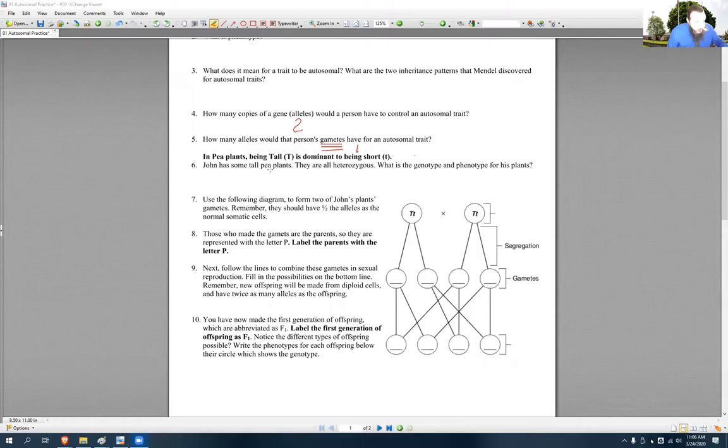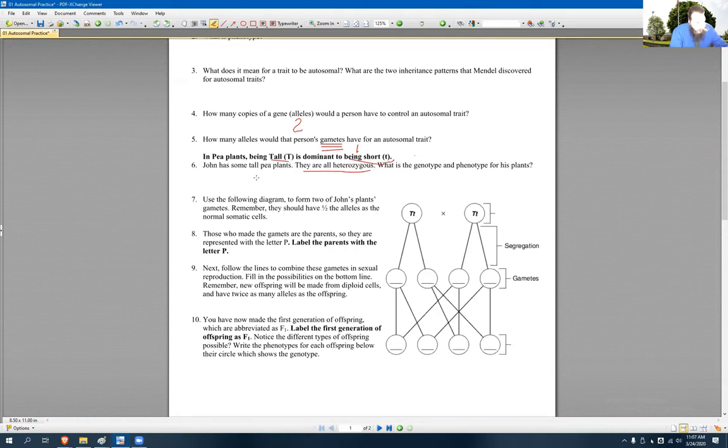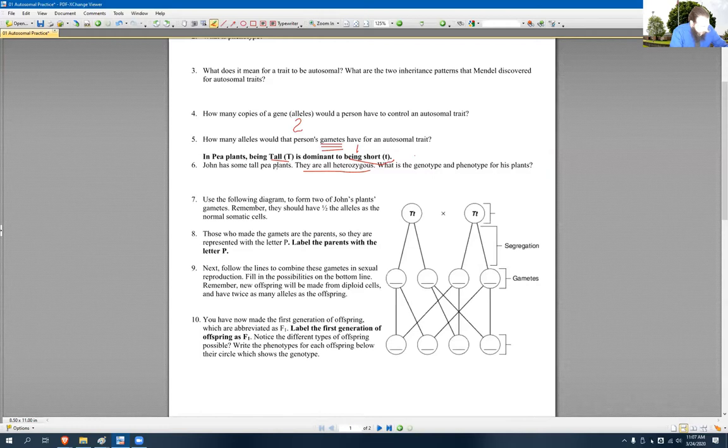Right? So we got some heterozygous pea plants. What would their genotype be? And it's tall, right? Right. We got a tall plant. What kind of T would we have for it to make it tall? The capital one. Yep. And if it's heterozygous, the other allele would be a? Small T. Little T, very good.